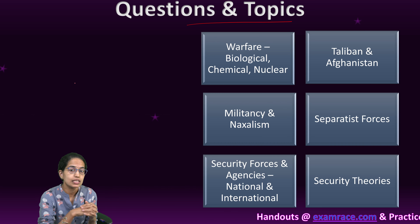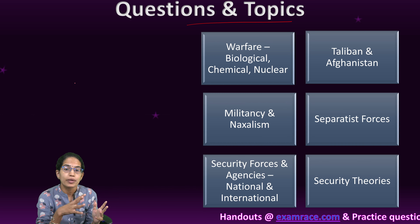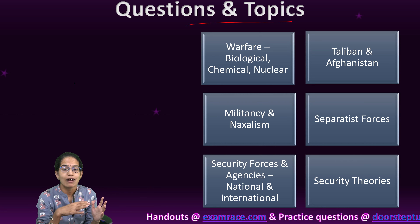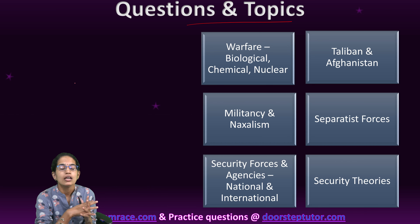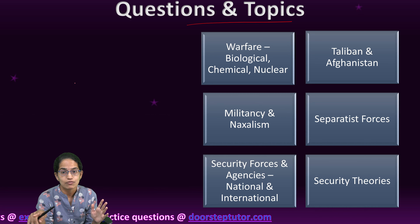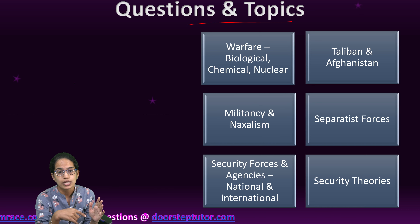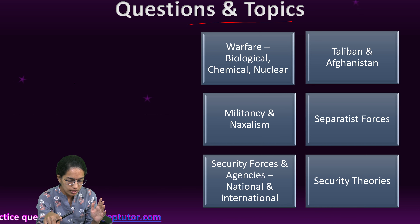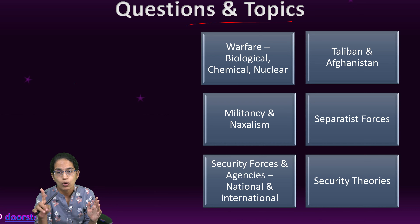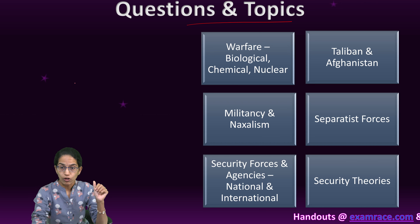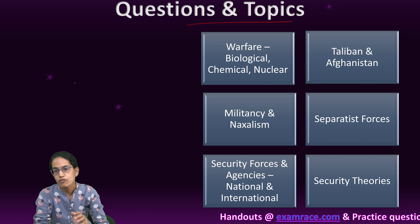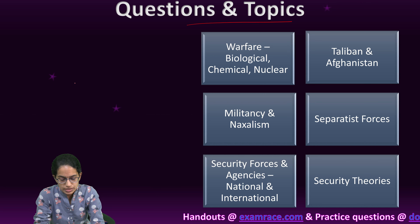The major international agencies worldwide are also important. Coming to external threats, we have the issues of Khalistan, Taliban, Afghanistan. Then we have China developing its One Belt One Road initiative — the ocean route and the land route. We are also focusing on biological warfare.